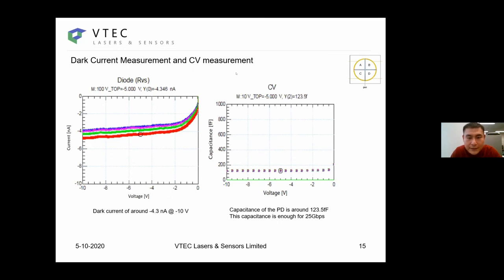When we had the core detector manufactured, we also measured the dark current and capacitance of each quadrant. As you can see in the left hand side, we have around 4.3 nanoamp dark current at around minus 10 volt reverse bias voltage. On the right hand side, with all four quadrants, we have around 125 femtofarad capacitance, which would indicate that this device would be suitable for 25G PRBS communication.